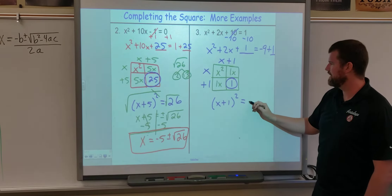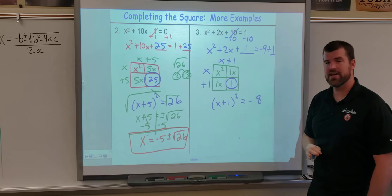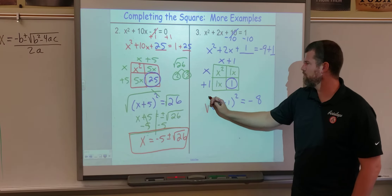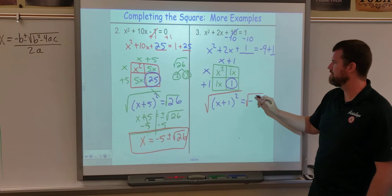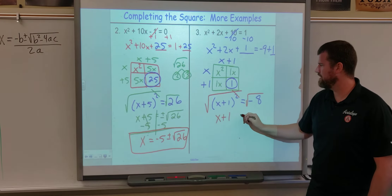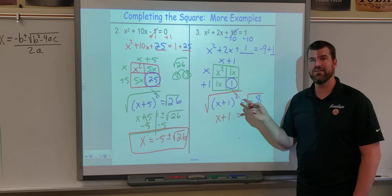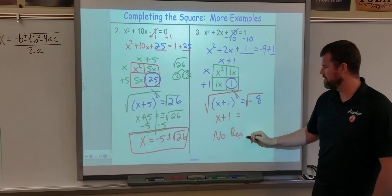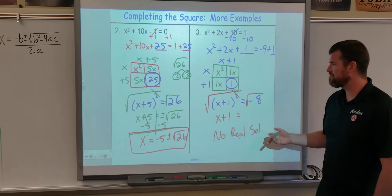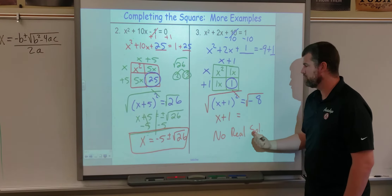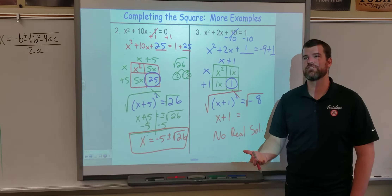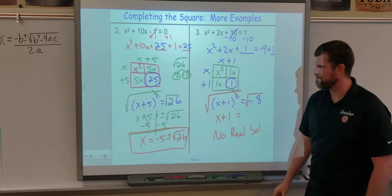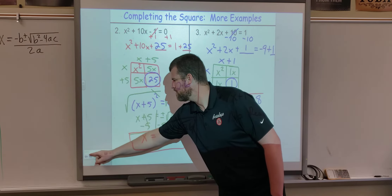The right side adds up to a negative, and you might already recognize we have another no-solution situation. Our next step is to take the square root of both sides: x + 1 equals the square root of a negative — no real solutions. If you solved this with the quadratic formula you would also get no real solutions; if you tried to factor it, it wouldn't factor. No matter which method you use, you get no real solutions.